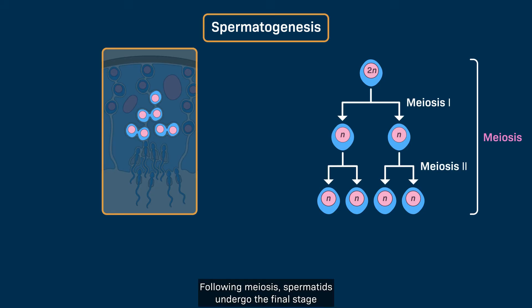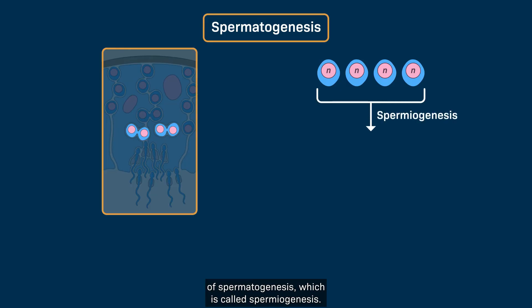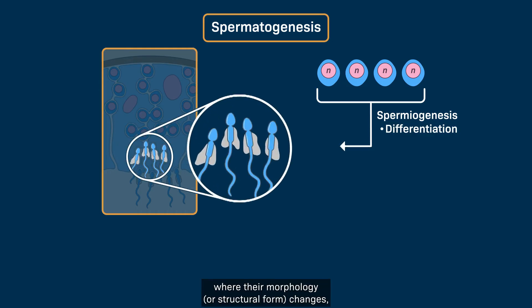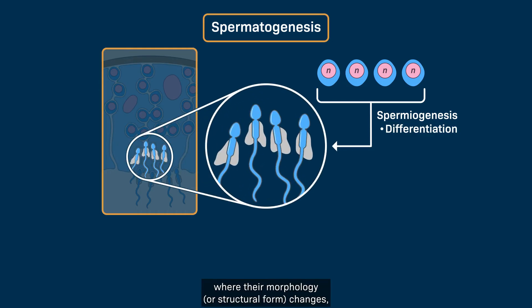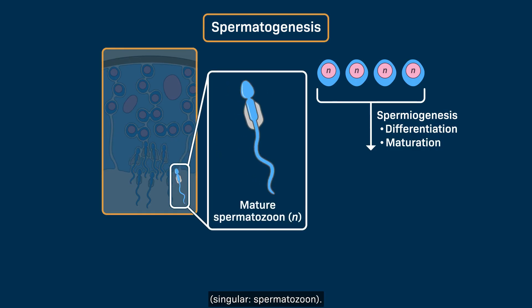Following meiosis, spermatids undergo the final stage of spermatogenesis, which is called spermiogenesis. During spermiogenesis, spermatids differentiate, where their morphology, or structural form, changes, and mature into haploid cells referred to as spermatozoa, singular spermatozoan.